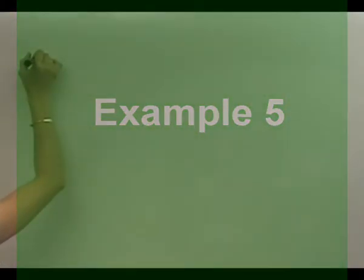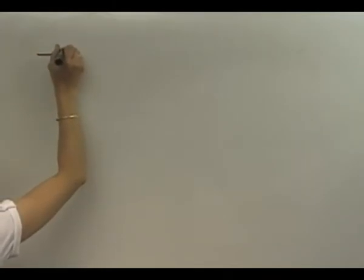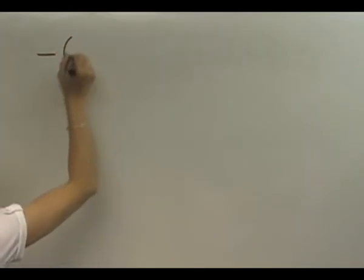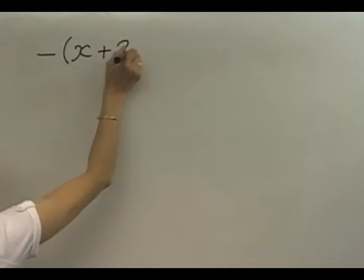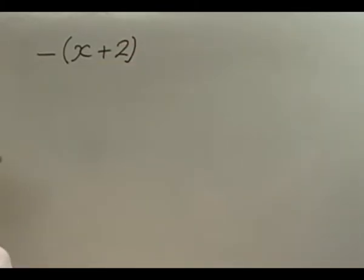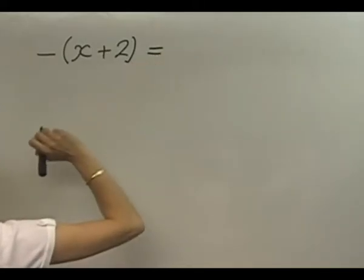Two more examples. Here's one of them: negative 1 bracket x plus 2 close bracket. Now you notice negative 1 is written as just negative. You'll see this quite a lot. It's the sort of thing they ask you in exams to try and trick you. Basically, that's negative 1 multiplied by x and negative 1 multiplied by 2.